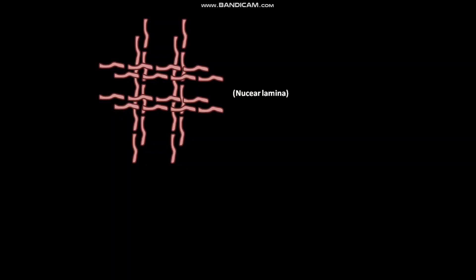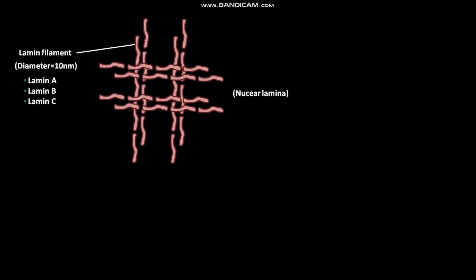This is the schematic diagram of the structure of the nuclear lamina. The nuclear lamina is made up of lamin filaments. The diameter of a lamin filament is 10 nanometers. The lamin filament is made up of lamin A, lamin B, and lamin C.